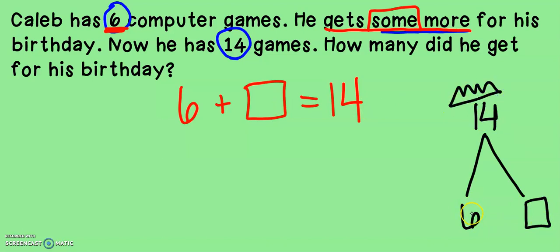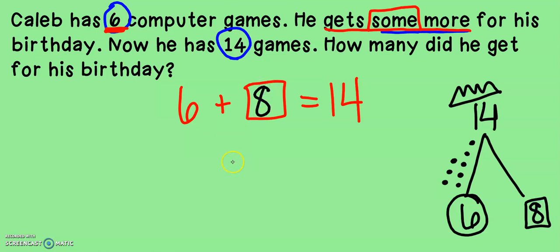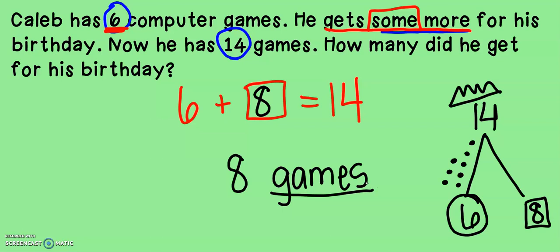So I need to figure out how many more I need to get from six to 14. I think I'm going to count up again on this problem. So I'm going to go six, seven, eight, nine, 10, 11, 12, 13, 14. Let's count how many dots I made: one, two, three, four, five, six, seven, eight. That means he got eight games for his birthday. Wow, he is one lucky kiddo — eight games for his birthday.